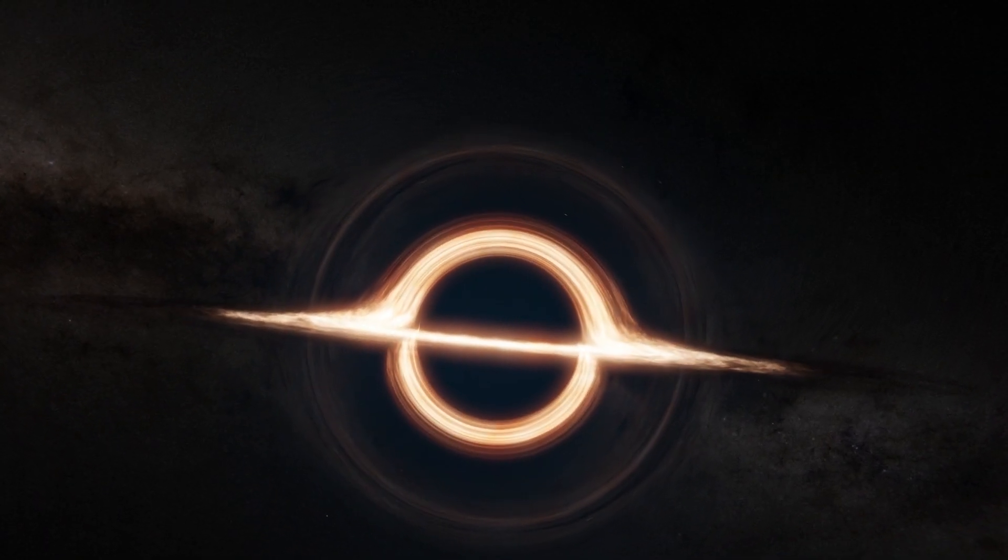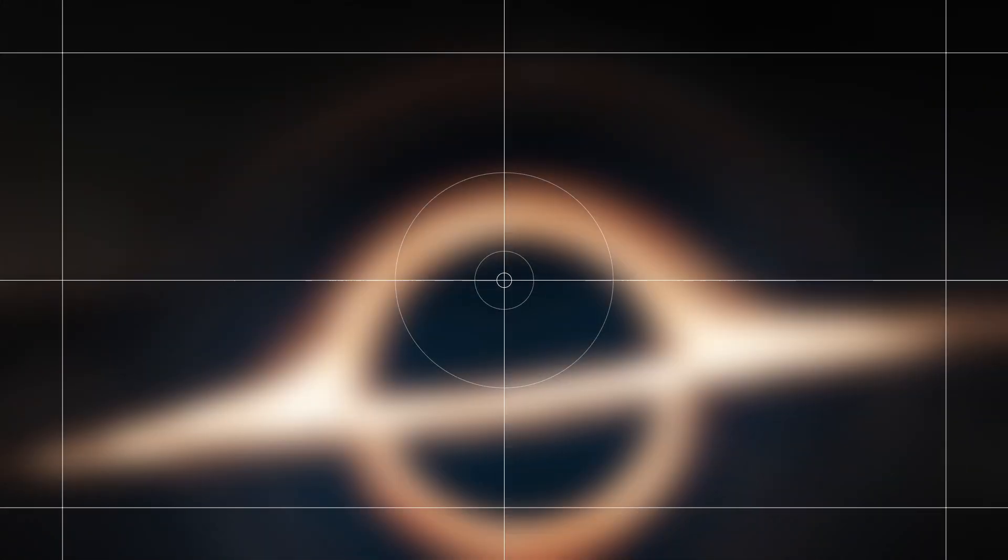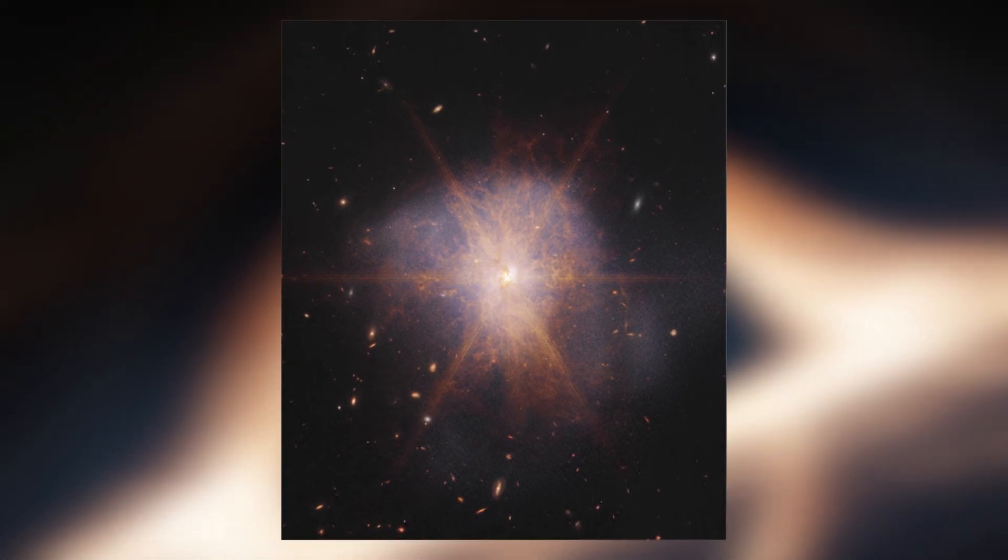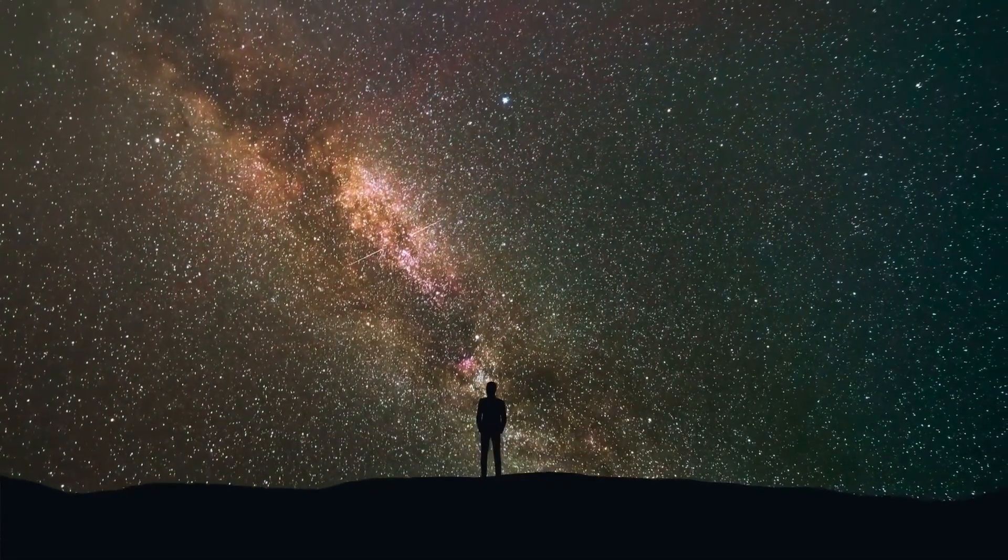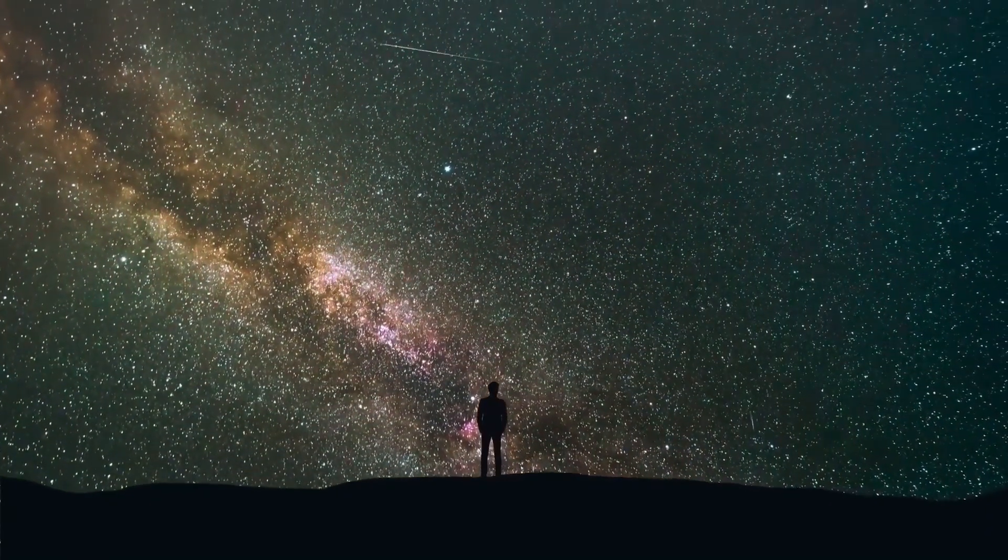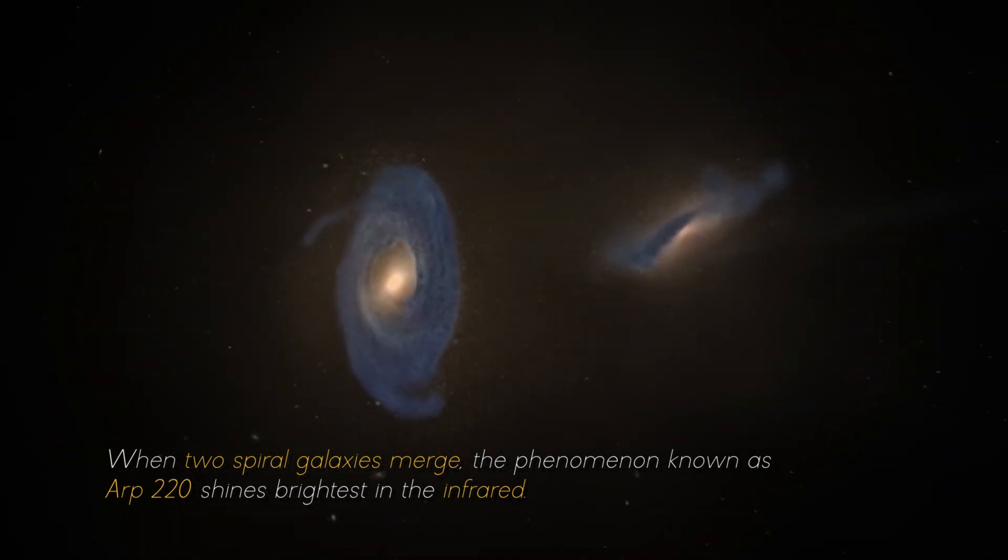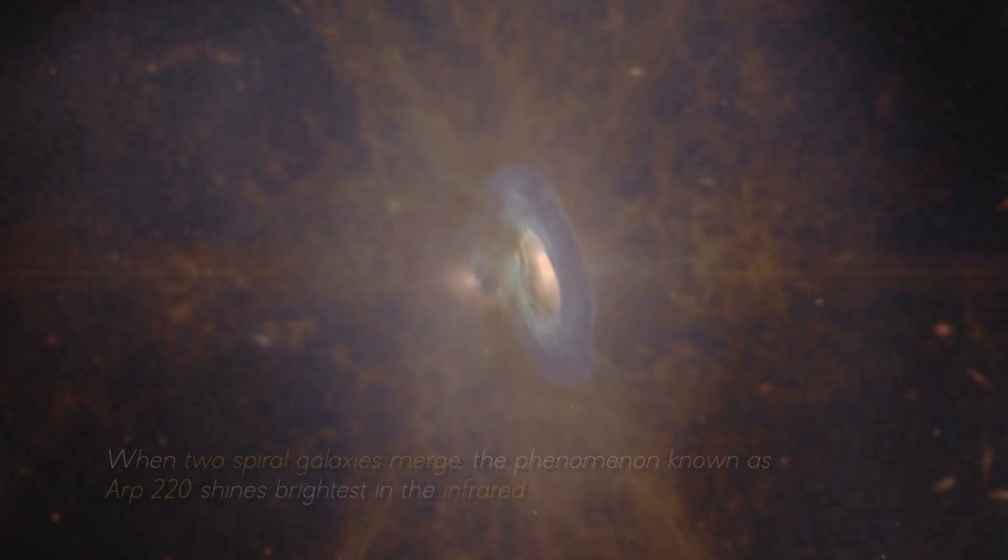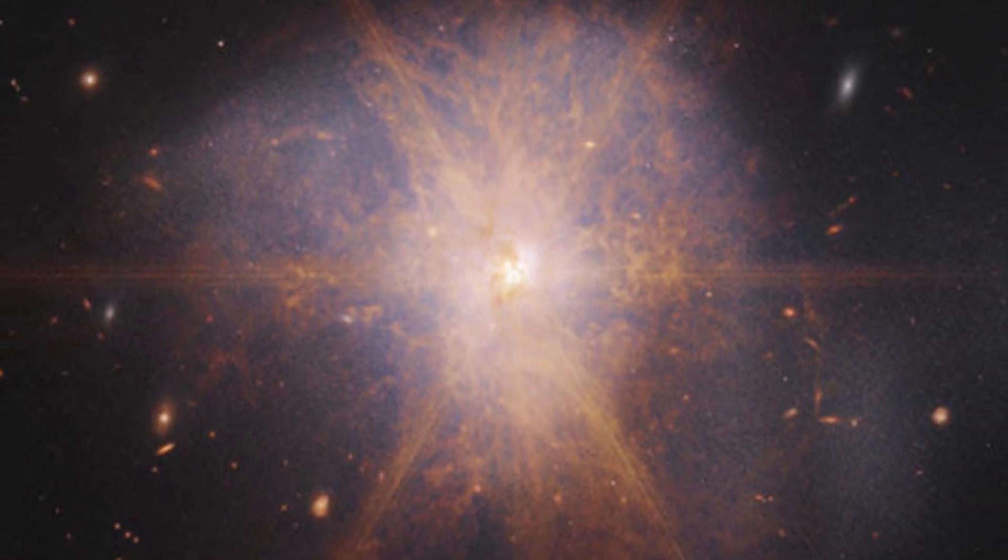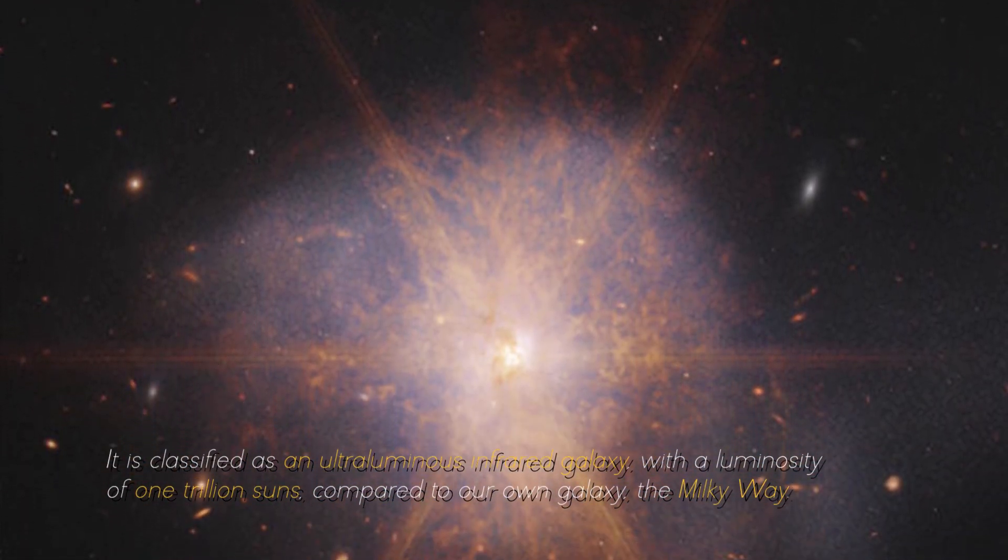NASA has made an exciting announcement about the galactic merger of ARP 220, which was captured by the James Webb Space Telescope. This impressive galactic merger can be seen shining among other galaxies in the night sky. When two spiral galaxies merge, the phenomenon known as ARP 220 shines the brightest in the infrared, making it perfect for observation by the James Webb Space Telescope.